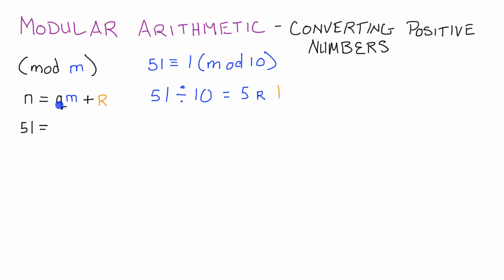51 is the number we want to convert so that we can use it in mod 10, so n is 51. That's equal to some number q — q can be whatever we need it to be. In our case, q is 5. Then qm means q times m, or 5 times 10, and m is our mod. So 51 equals 5 times 10, which is 50, plus a remainder of 1. Writing it in the formula n = qm + r is really helpful when we start converting negative numbers to fit within our mod.